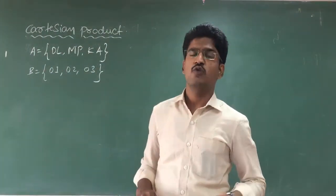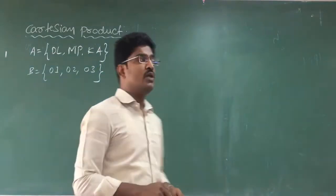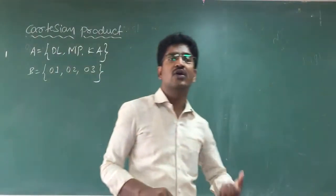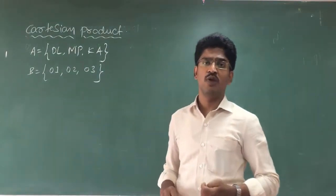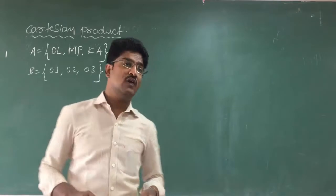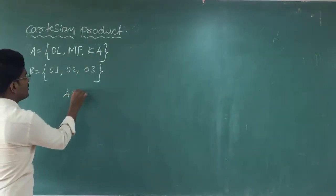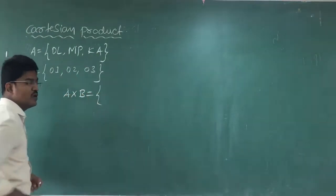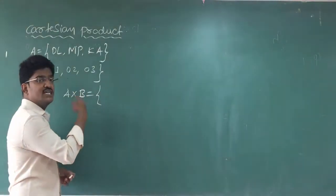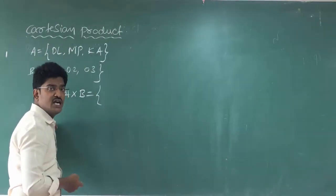I think you all have done the homework problem. But if you have not done, no problem. I will solve it here and you can check whether your homework is correct or wrong. So let us solve it — A cross B. We have to write the ordered pairs.